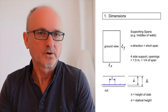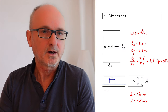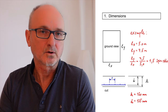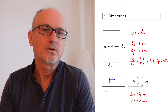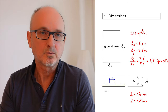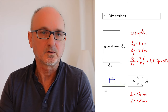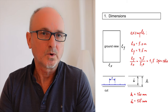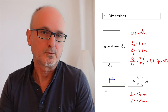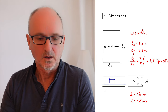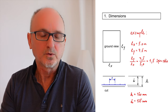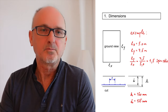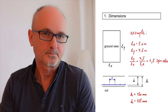For this example we take spans of 5 meters and 7.5 meters. The short one is LX and the longer one is LY. Without a computer, we also need the span ratio, which is LY divided by LX: 7.5 divided by 5 gives a span ratio of 1.5. We take a slab height of 160 millimeters and assume a statical height of 125 millimeters — subtracting 35 millimeters for concrete cover and bar diameter.